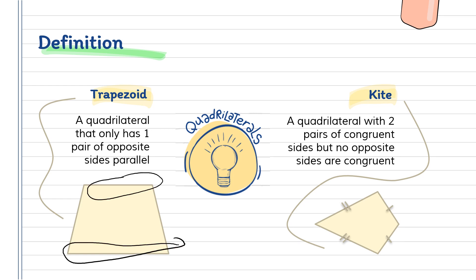Our kite is a quadrilateral with two pairs of congruent sides, but no opposite sides are congruent. This side is congruent with this one, as well as this side and this side. But the two sides opposite to each other will never be congruent.